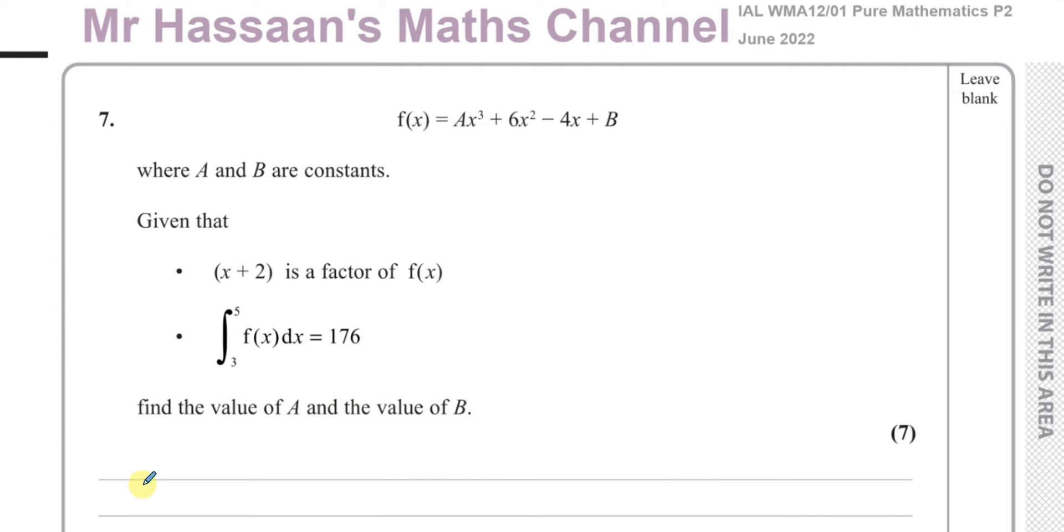First of all, if (x+2) is a factor of f(x), then basically if we substitute whatever makes this bracket 0 into f(x), it will make f(x) equal 0. So what makes x+2 equals 0? When x equals minus 2, f(x) is equal to 0, or we could say f(-2) equals 0.